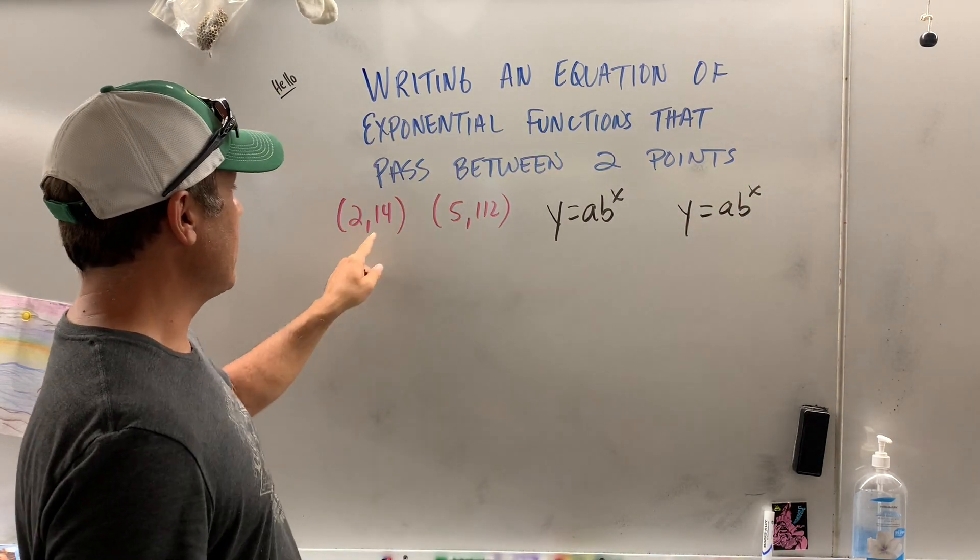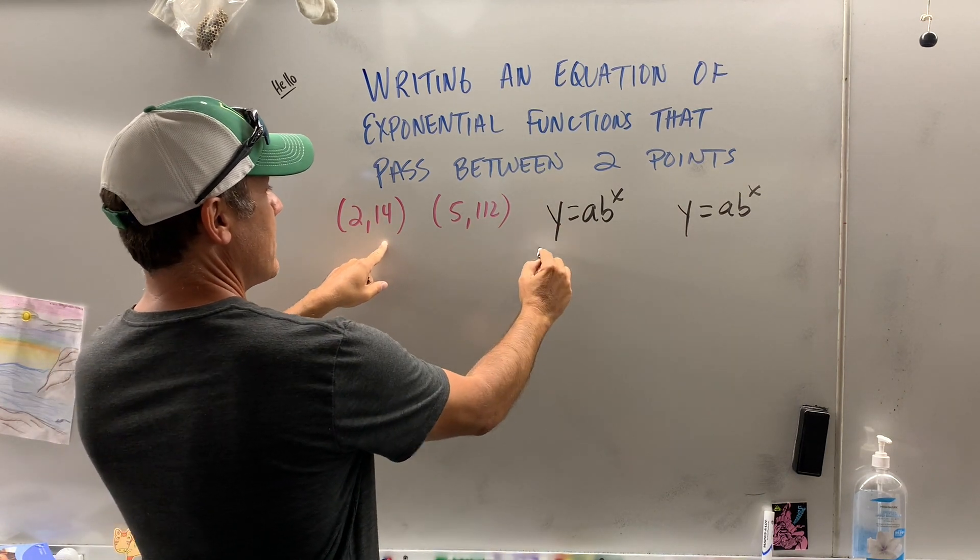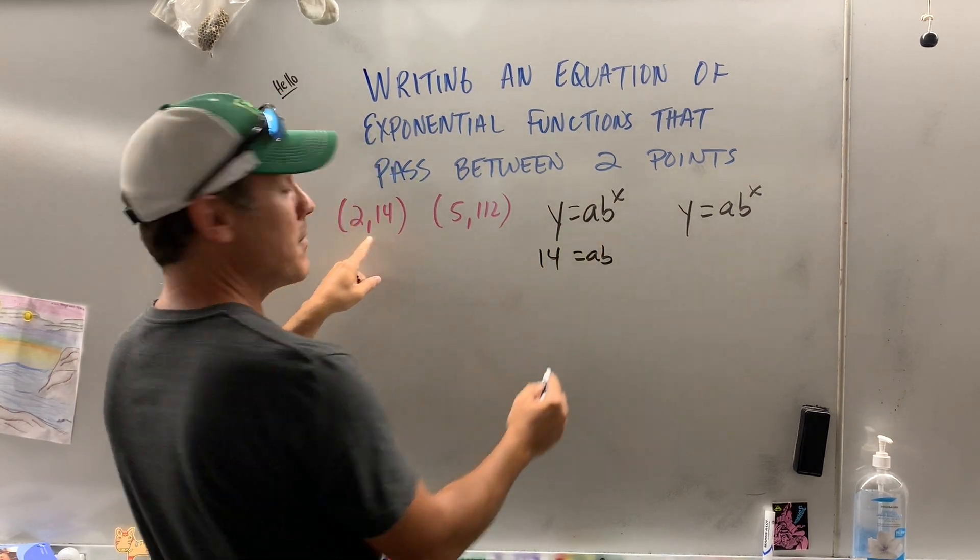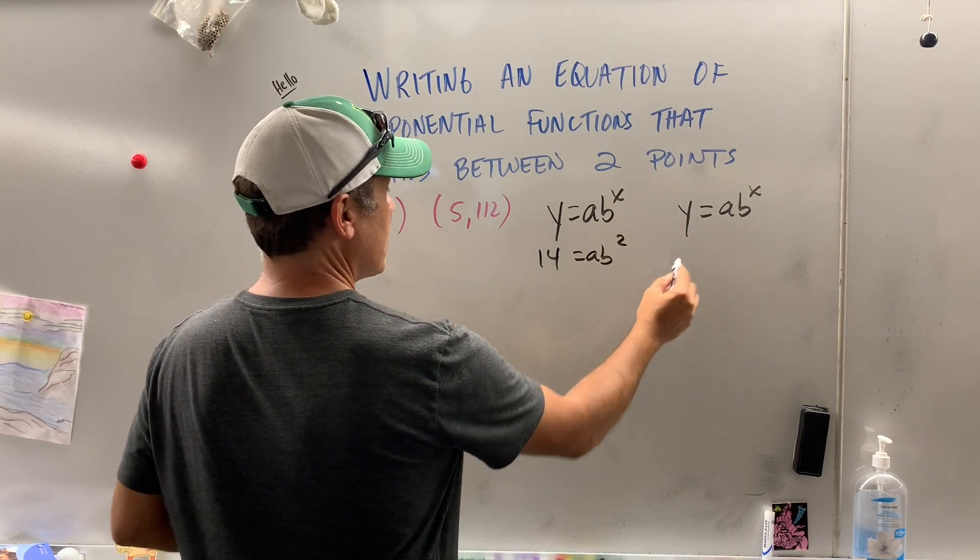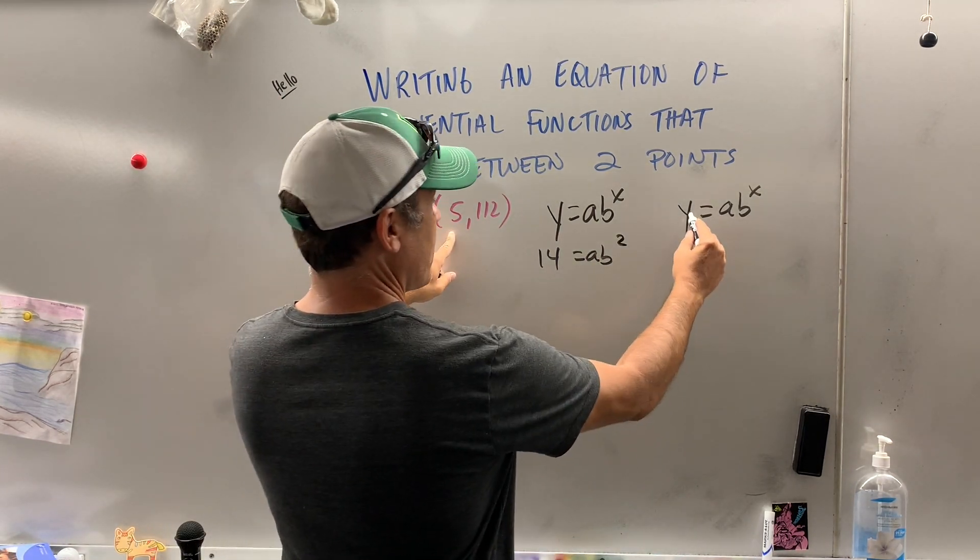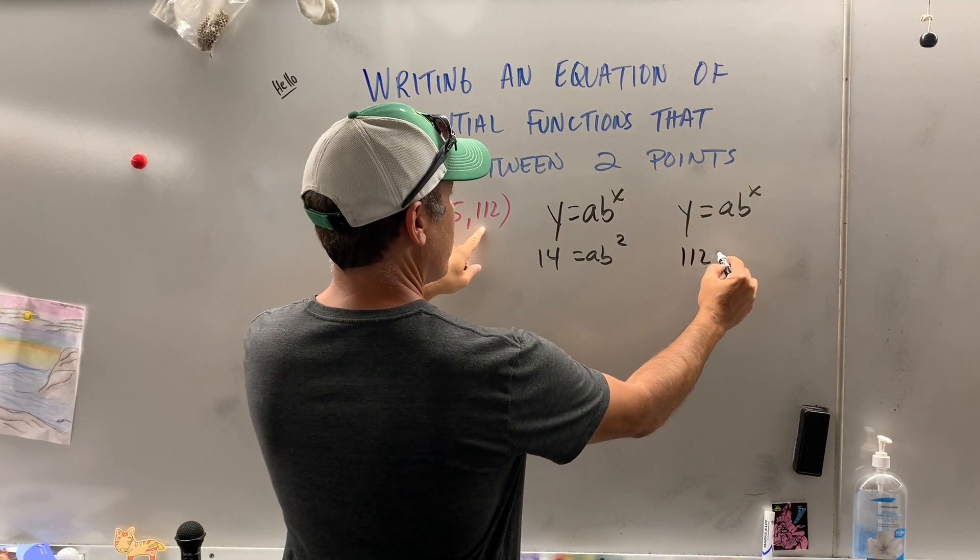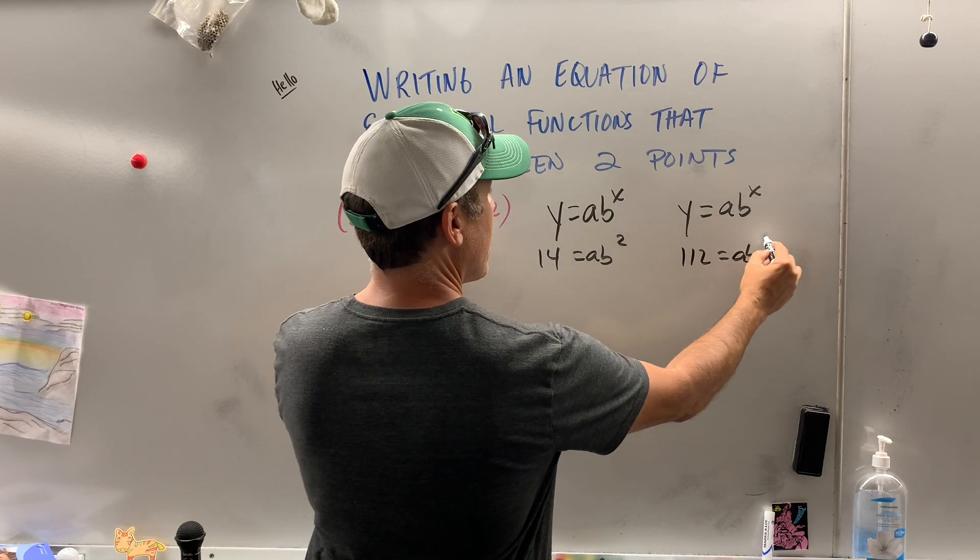Now we're going to start plugging in numbers. My y value here is 14, a, b, my x value is 2. Let's pop this point in here. The y value is 112, a, b to the fifth.